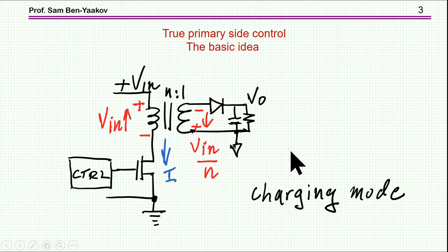So here's the issue. We have a flyback, and the objective of the primary side control is to control the operation, that is to stabilize the output without sensing the output, but only from the primary side. So this is the objective of the primary side control. I'm showing here now the charging mode.